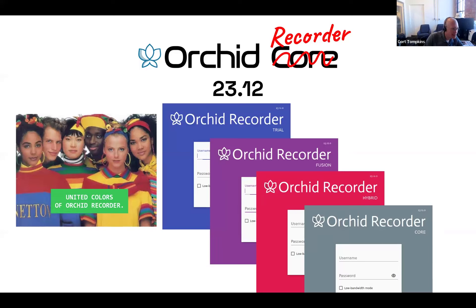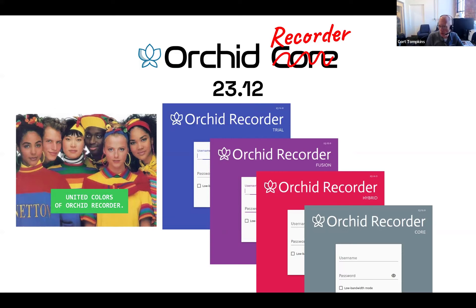I've got this example of the United Colors of Orchid Recorder. Orchid Recorder changes colors to match the license type associated with it — the part of the bigger system that the Orchid Recorder serves. Our thought is that if you're using Orchid Fusion or Orchid Hybrid, that is one big system.